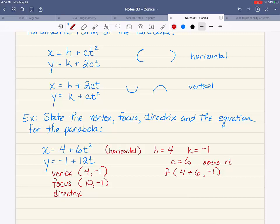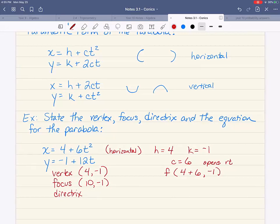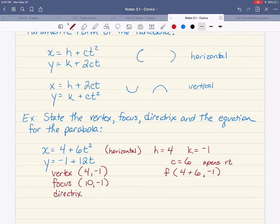Now to find the directrix, I am going to go c units in the opposite direction of what I just went. So instead of going six units to the right, I'm going to go six units to the left. And my directrix, remember, is a line. It's either an x equals line or a y equals line.